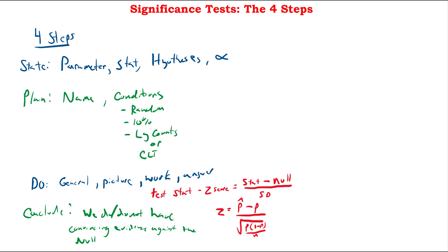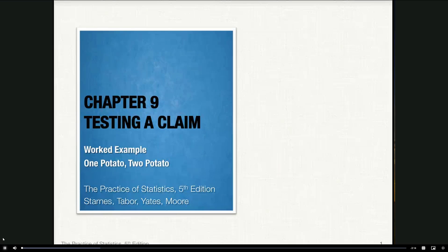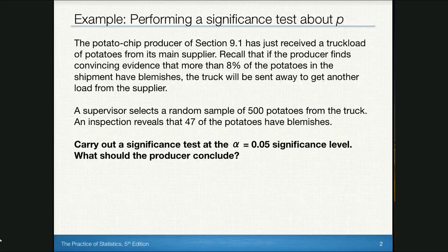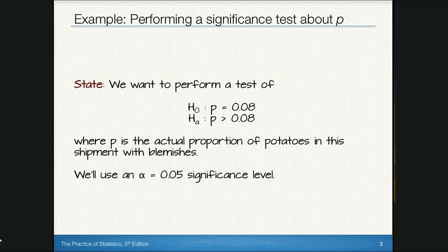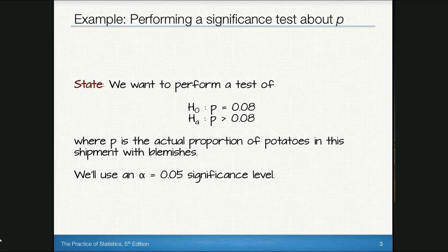All right, let's go through an example. A potato chip producer has just received a truckload of potatoes. If the producer finds convincing evidence that more than 8% of those potatoes have blemishes, the truck will be sent back. A supervisor selects a random sample of 500 potatoes, and 47 have blemishes. We'll carry out a significance test at the 5% significance level. For the State step: null hypothesis p = 0.08, alternative p > 0.08, where p is the actual proportion of potatoes in the shipment with blemishes. Alpha equals 0.05.